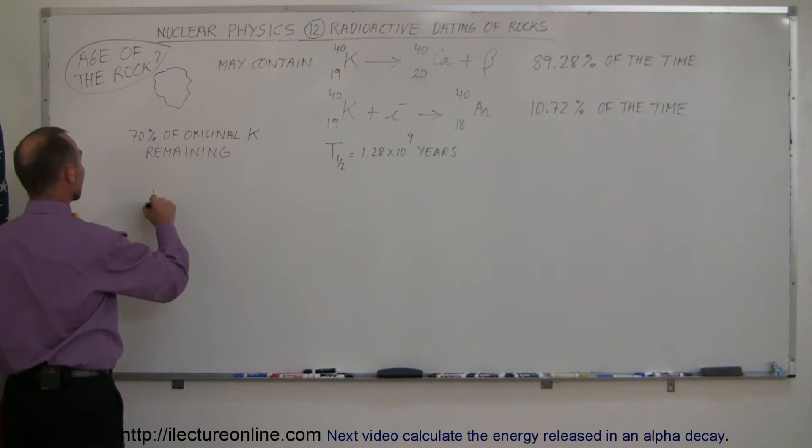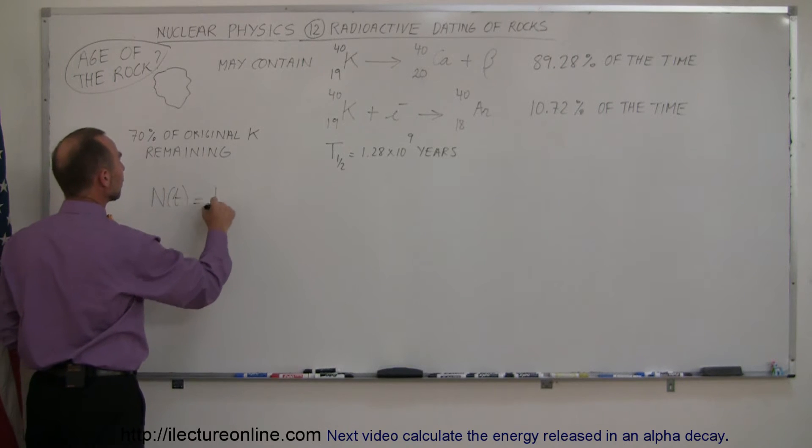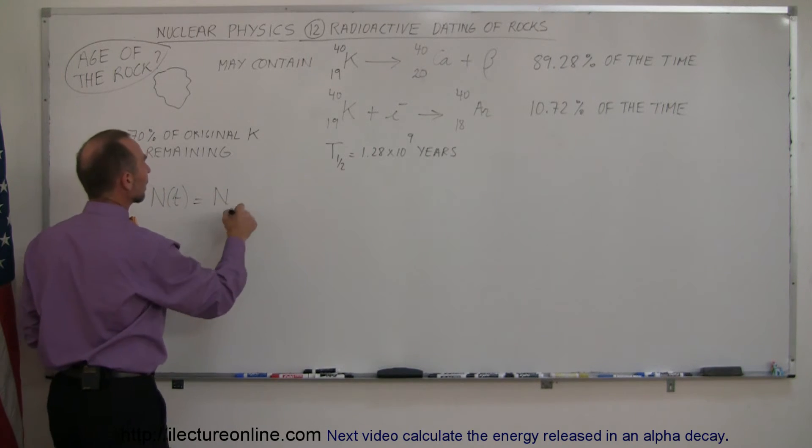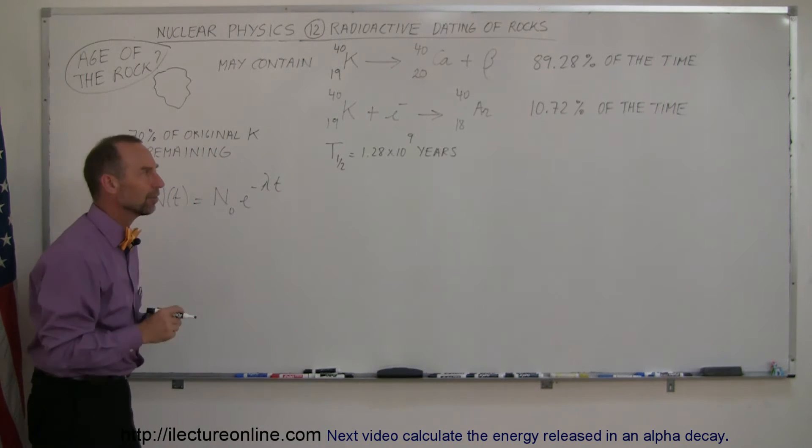And so the way to do that, of course, is to say that N remaining, the amount of potassium remaining, is equal to the amount of potassium we started with times e to the minus lambda times t, of course lambda being the decay constant.